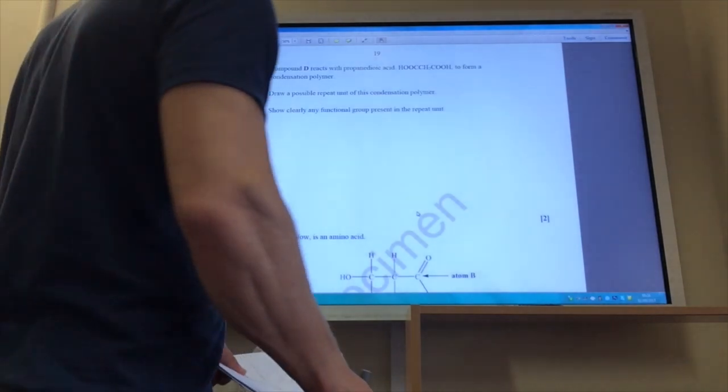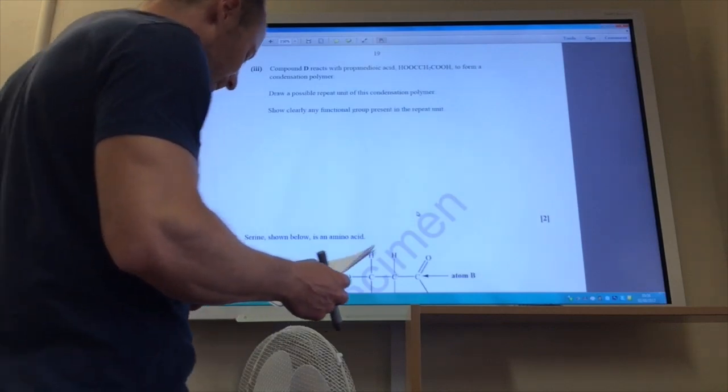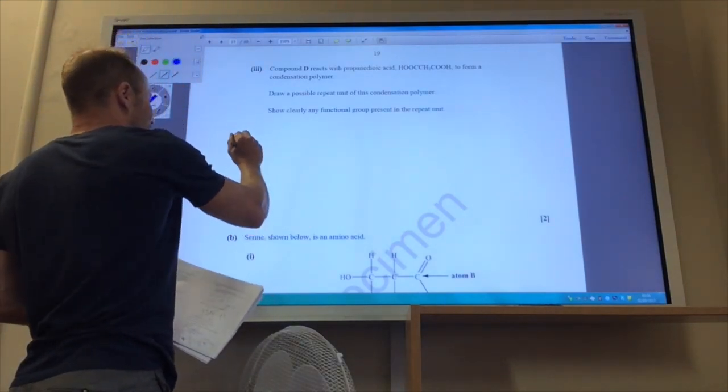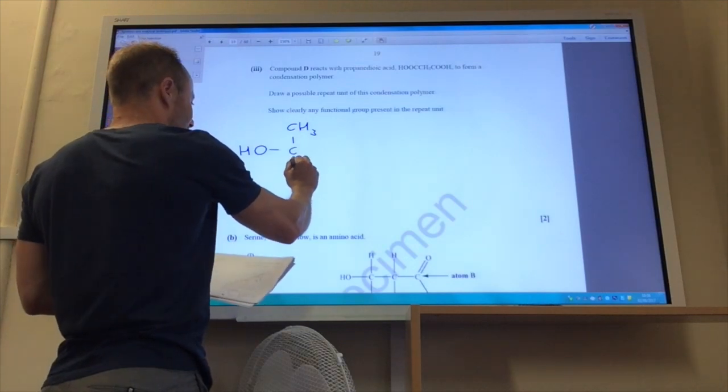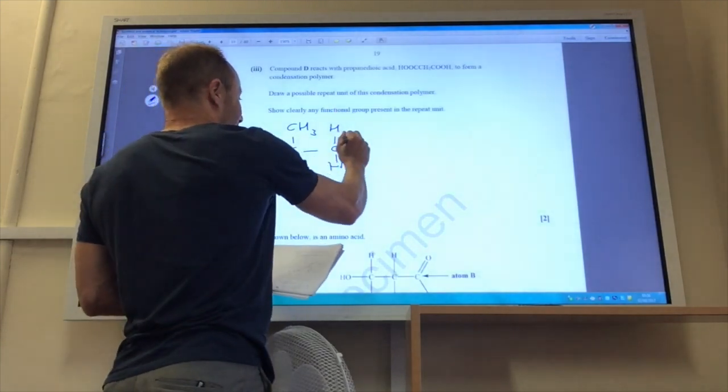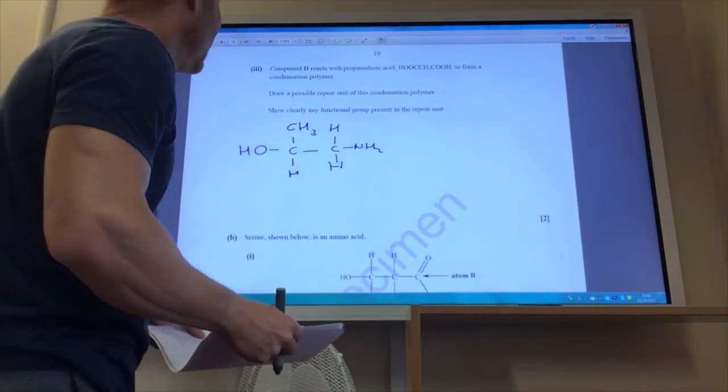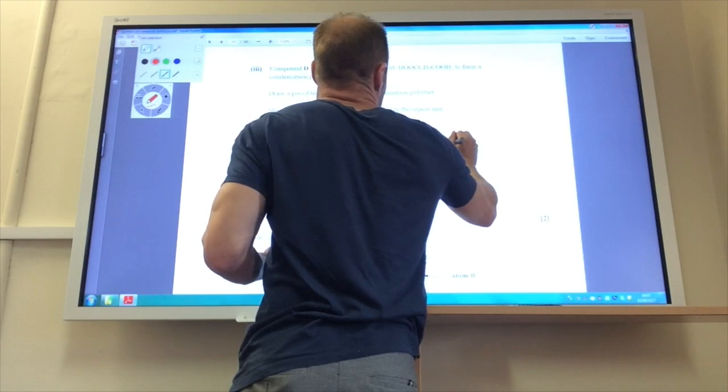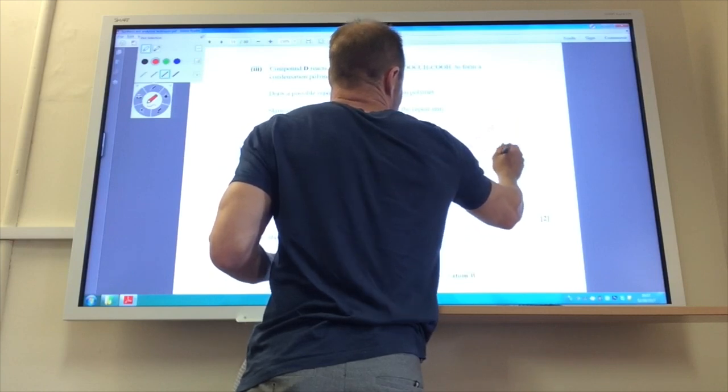Compound D reacts with propane dioic acid to form a condensation polymer. Draw a possible repeat unit for this. Let's draw out, first of all, my compound D. I'm going to draw it in a slightly different way. I've got an alcohol group and I've got an amine group there, and then I've got a diacid here. I'll just draw this in a different colour so that you can see. It's got a CH2 in the middle and then a diacid group like so.